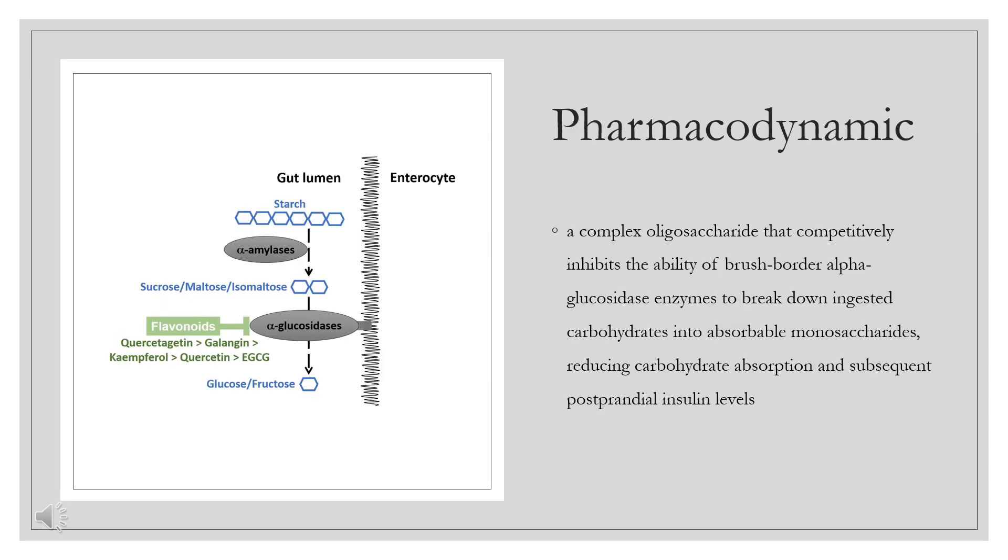Pharmacodynamic. Acarbose is a complex oligosaccharide that competitively inhibits the ability of brush border alpha-glucosidase enzymes to break down ingested carbohydrates into absorbable monosaccharides, reducing carbohydrate absorption and subsequent postprandial insulin levels. Acarbose requires the co-administration of carbohydrates in order to exert its therapeutic effect, and as such should be taken with the first bite of a meal three times daily.